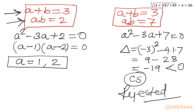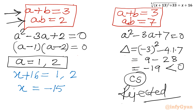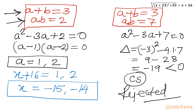Since a = x + 16, we substitute back: x + 16 = 1 gives x = −15, and x + 16 = 2 gives x = −14. So there are two real solutions: x = −15 and x = −14.